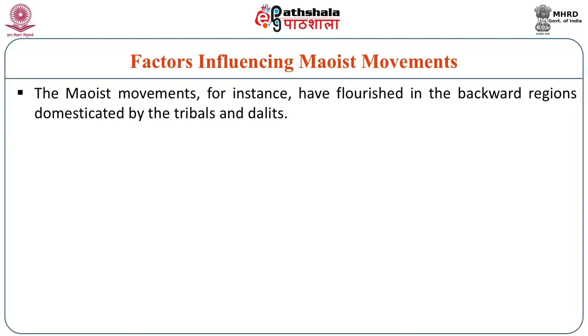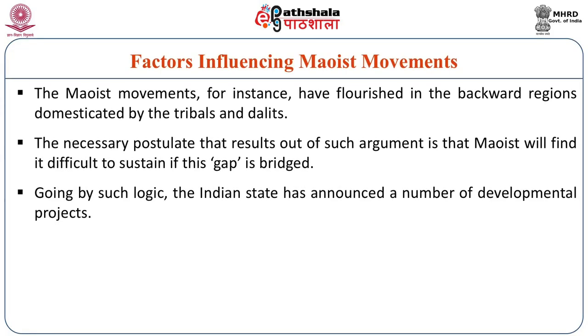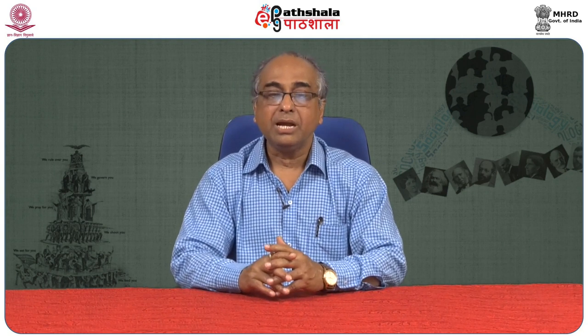The Maoist movement has flourished in regions called backward regions, dominated by tribals and Dalits. It cannot be a coincidence that Maoists are proliferating only in backward areas. Obviously, there is a connection between backwardness and Maoist operation. The second argument is that if this gap between development and underdevelopment is bridged, then Maoist movement and its support would go away. This argument follows from the logic that root causes or necessary conditions are the only conditions giving rise to the Naxalite movement.